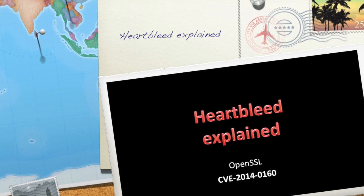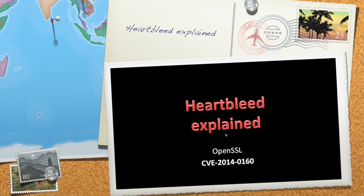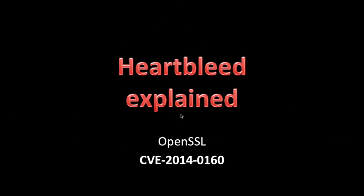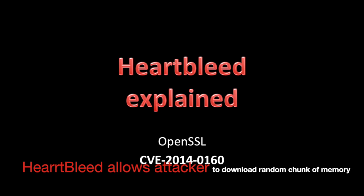Hello and welcome to this Heartbleed tutorial. In this video we will try to explain Heartbleed without any technical terms. Heartbleed allows an attacker to anonymously download a random chunk of memory from the server. This means they can get un-encrypted passwords and low-level encryption keys that protect your account. This is a recent vulnerability found in OpenSSL, and the CVE number is CVE-2014-0160.